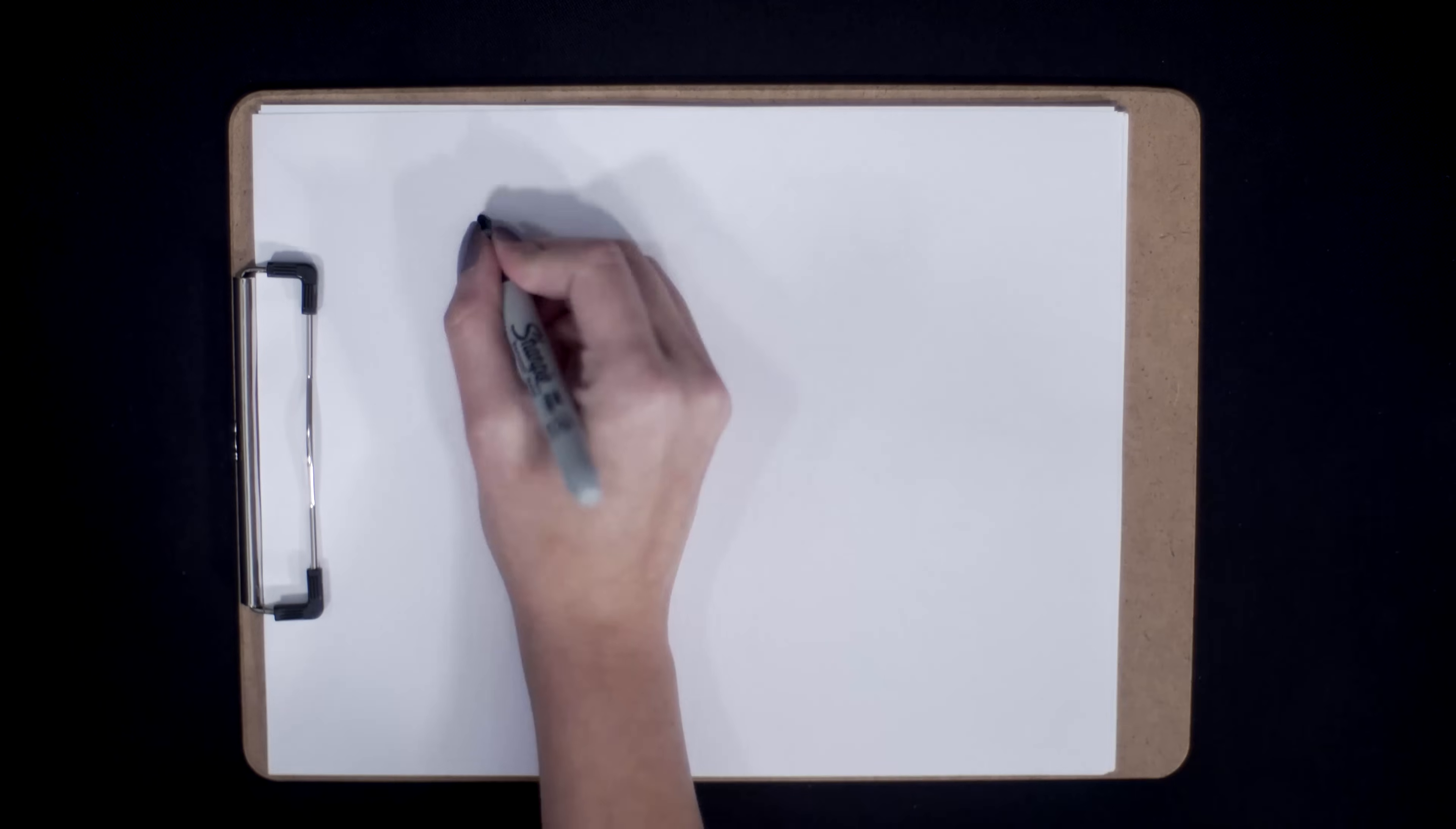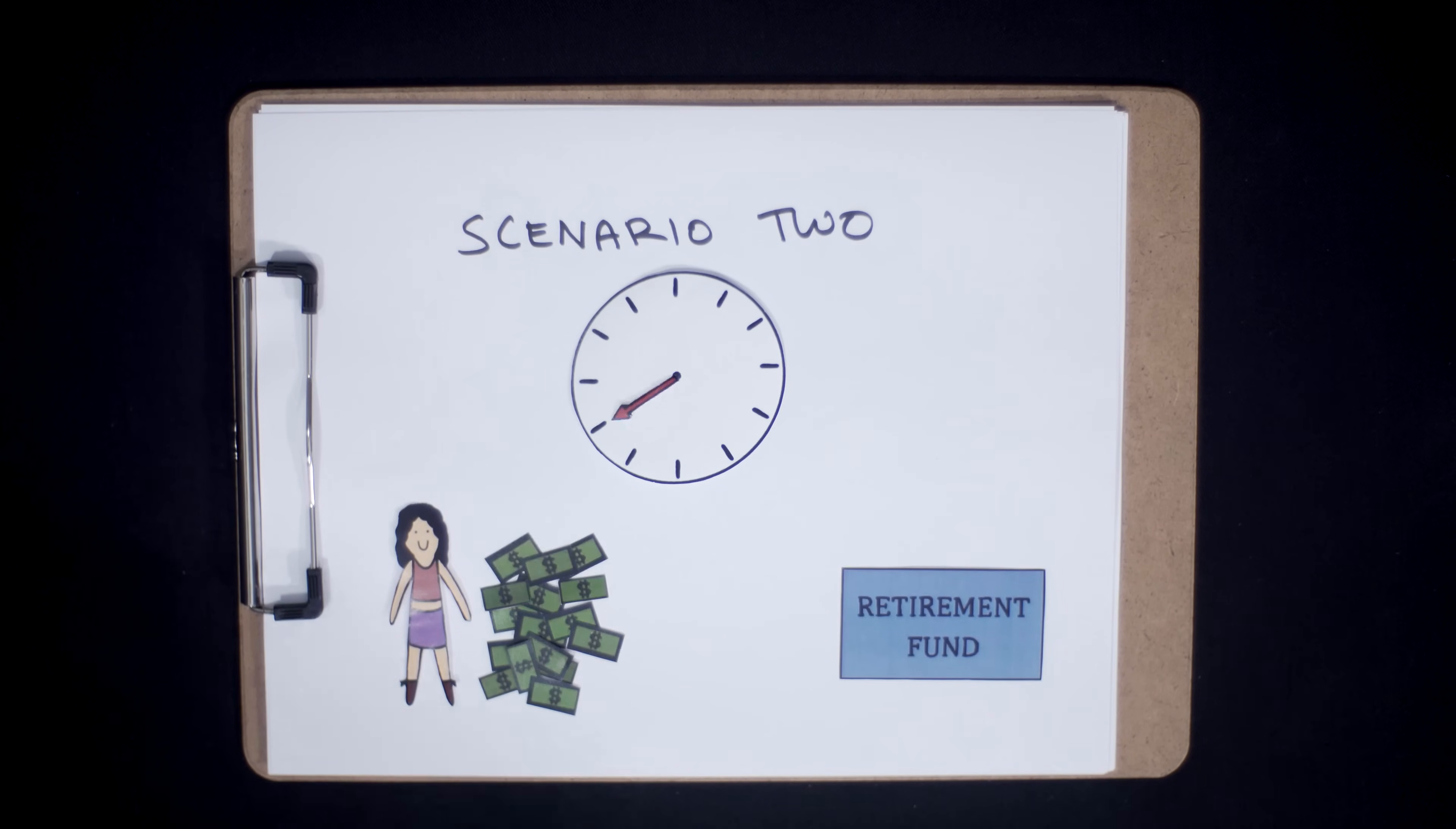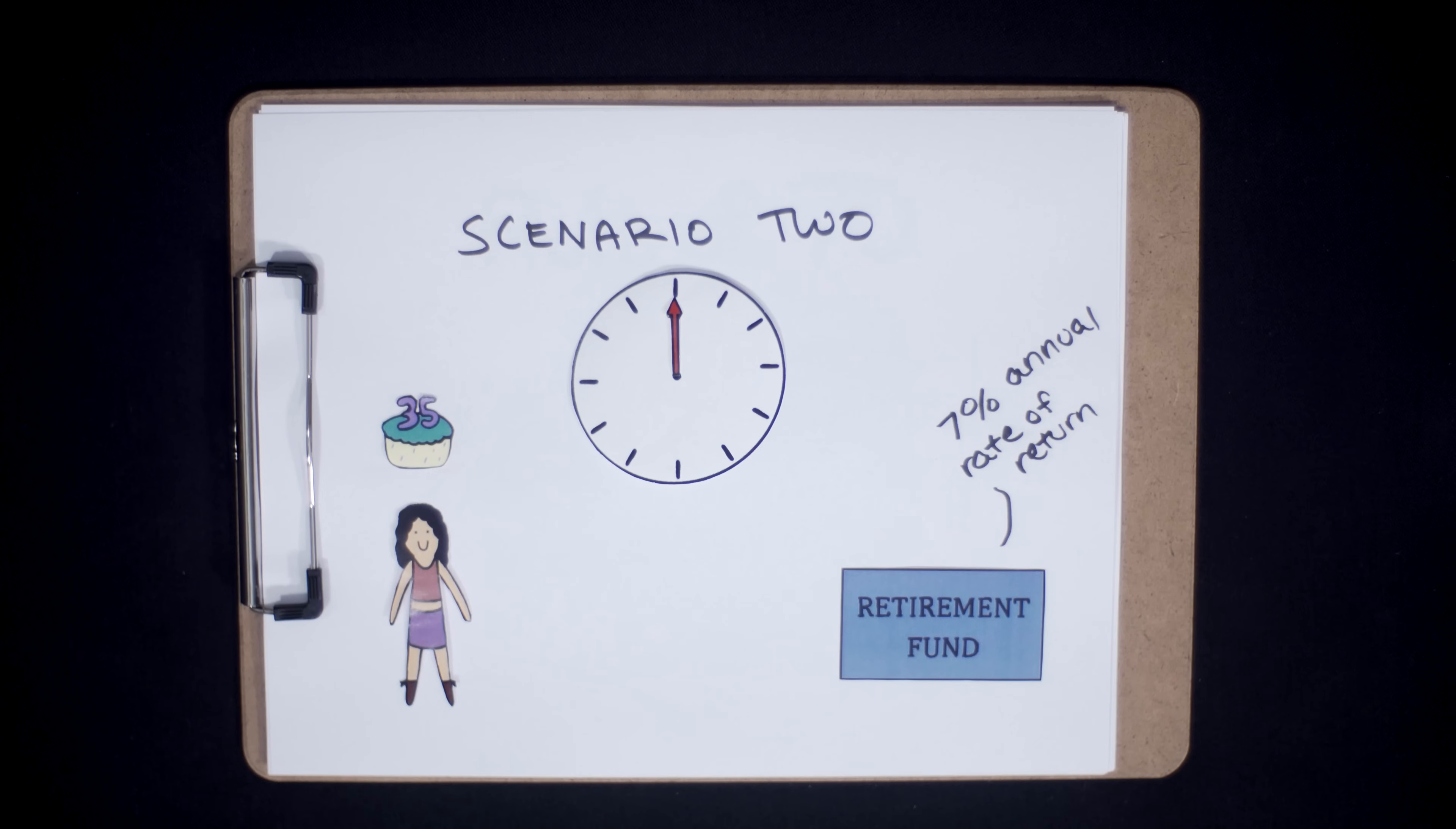Now onward to Scenario 2. Imagine Myopic Mary goes back in time 10 years and becomes Meticulous Mary. Meticulous Mary starts saving in her 20s so that by age 35, she has $20,000. At this point, she invests her money in a retirement fund that earns a 7% annual rate of return and doesn't touch her investment until retirement.